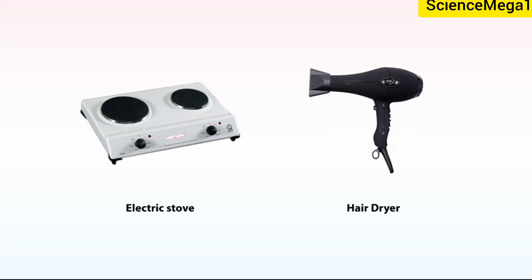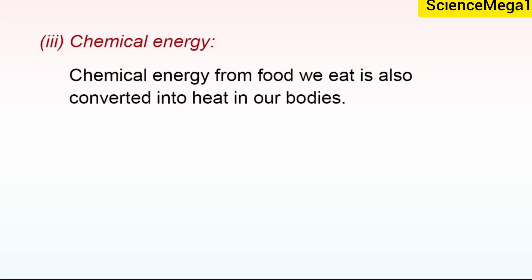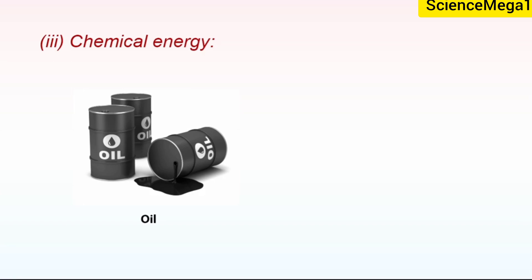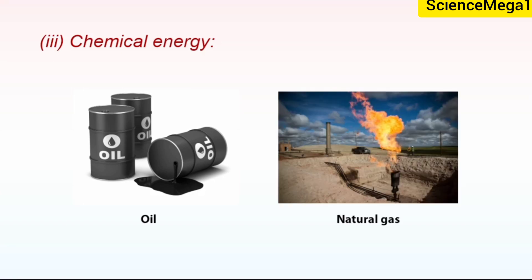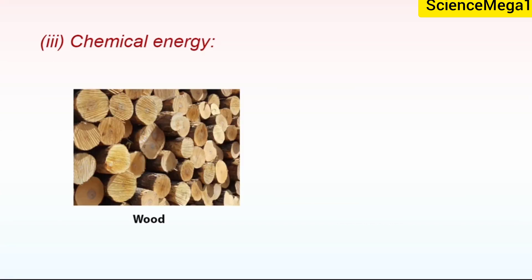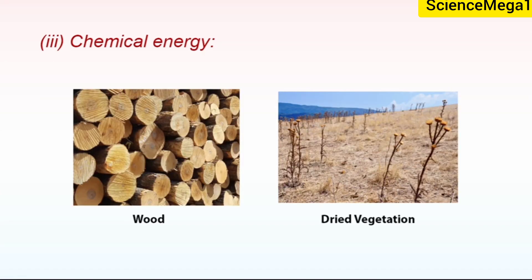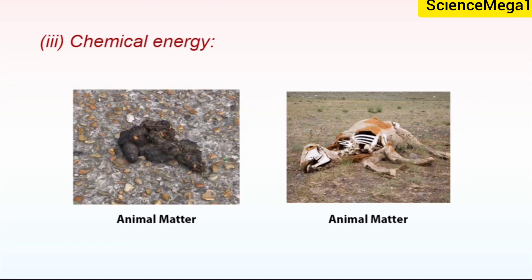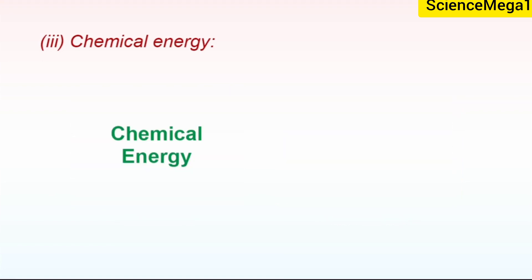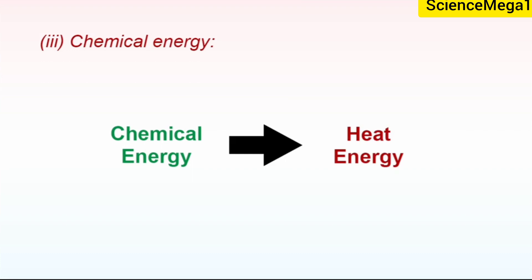Chemical energy from the food we eat is also converted into heat in our bodies. Oil, natural gas, wood, and dried vegetation, or animal matter, all burn, converting chemical energy into heat.